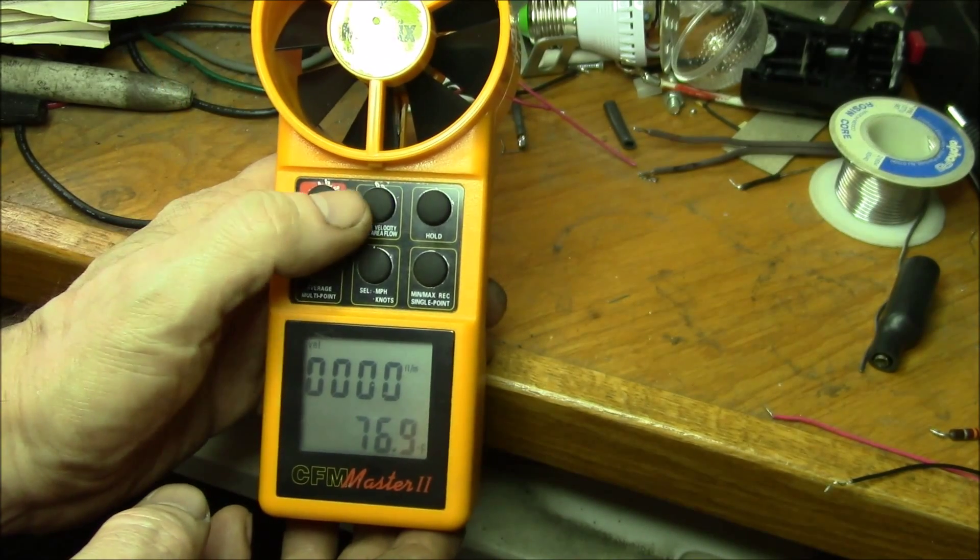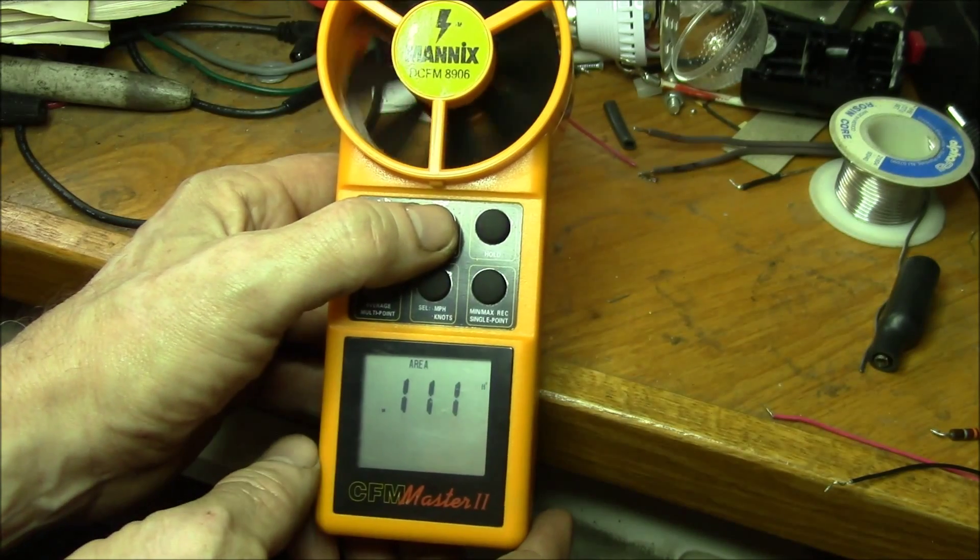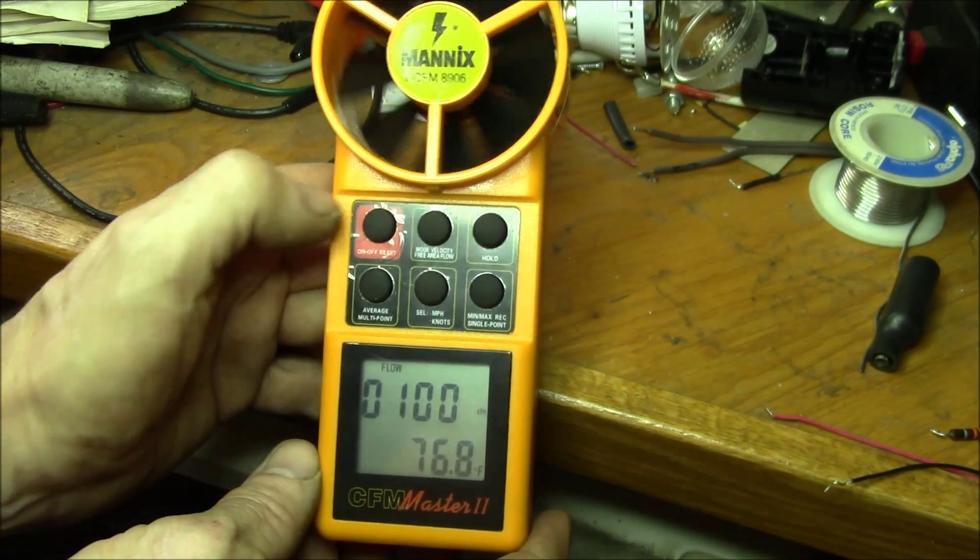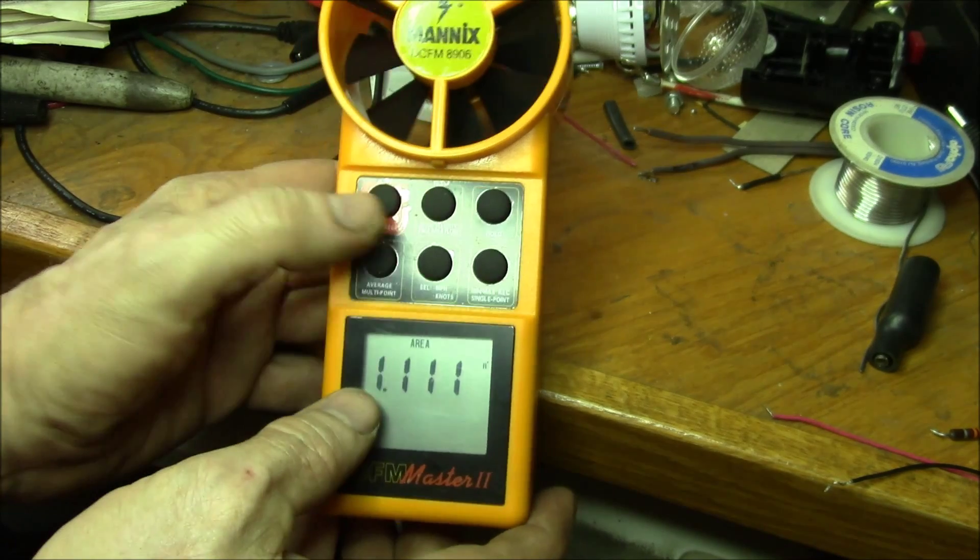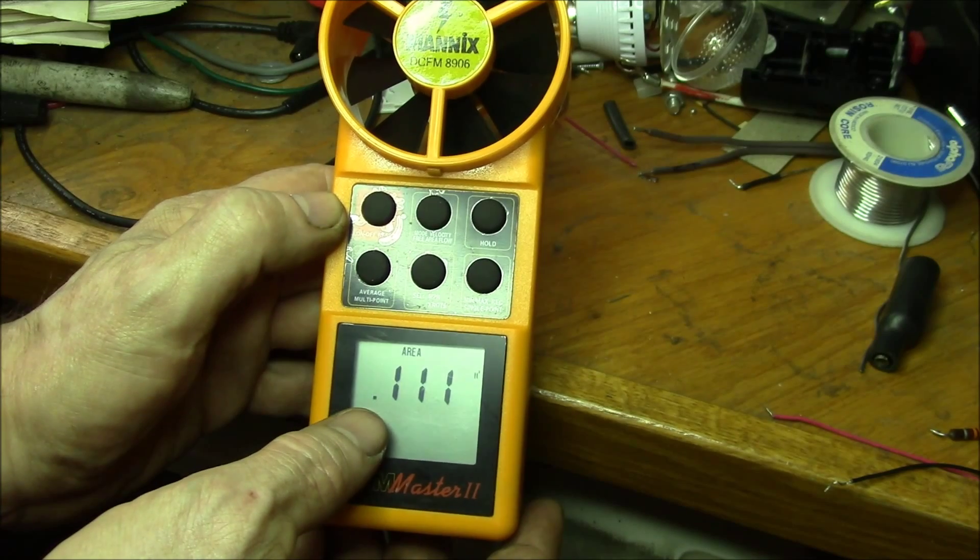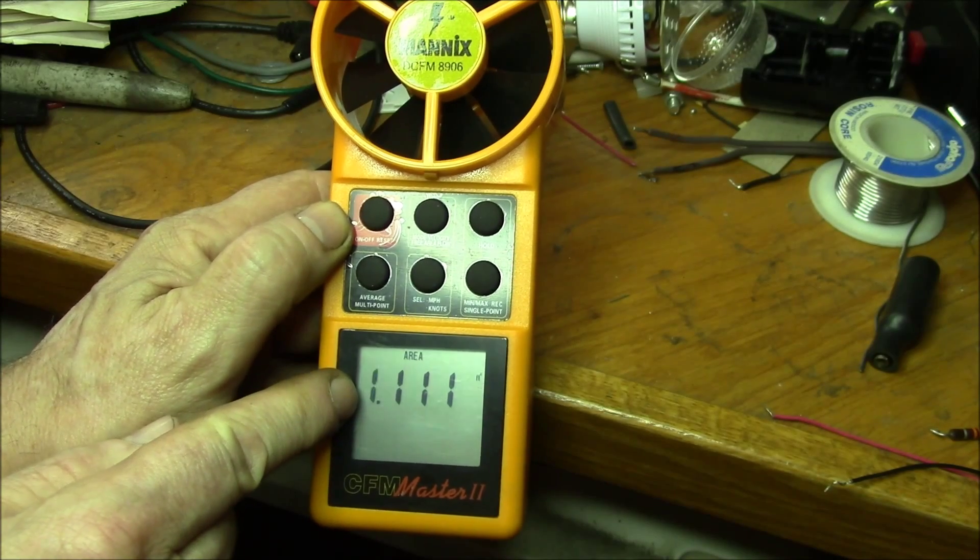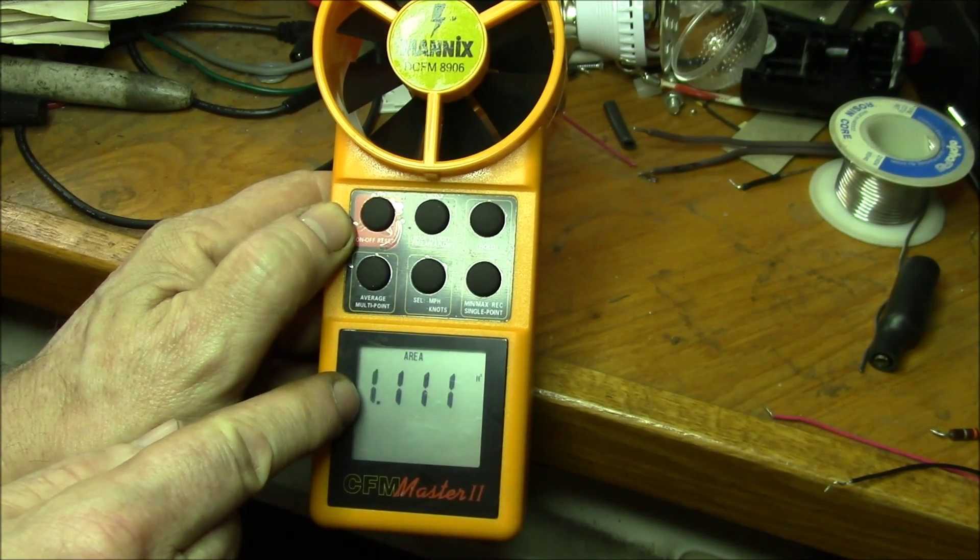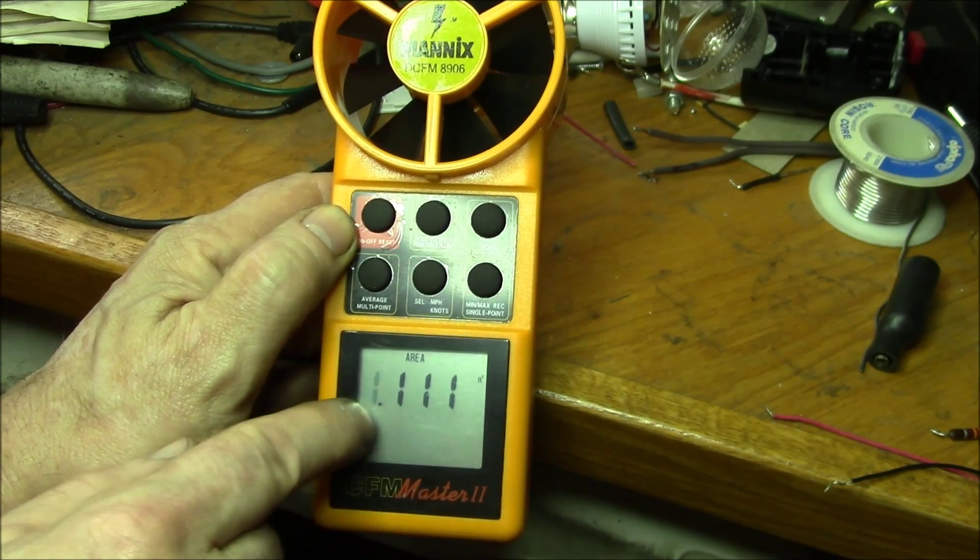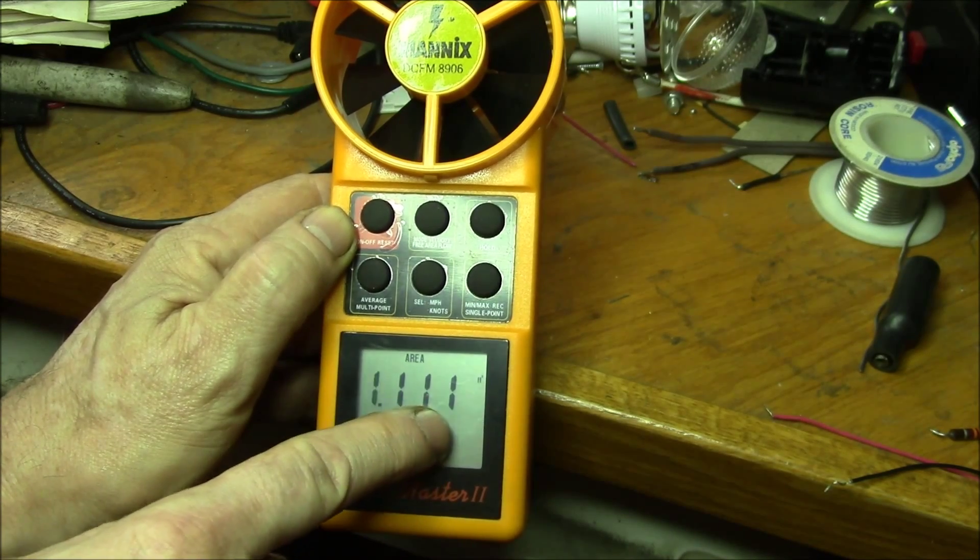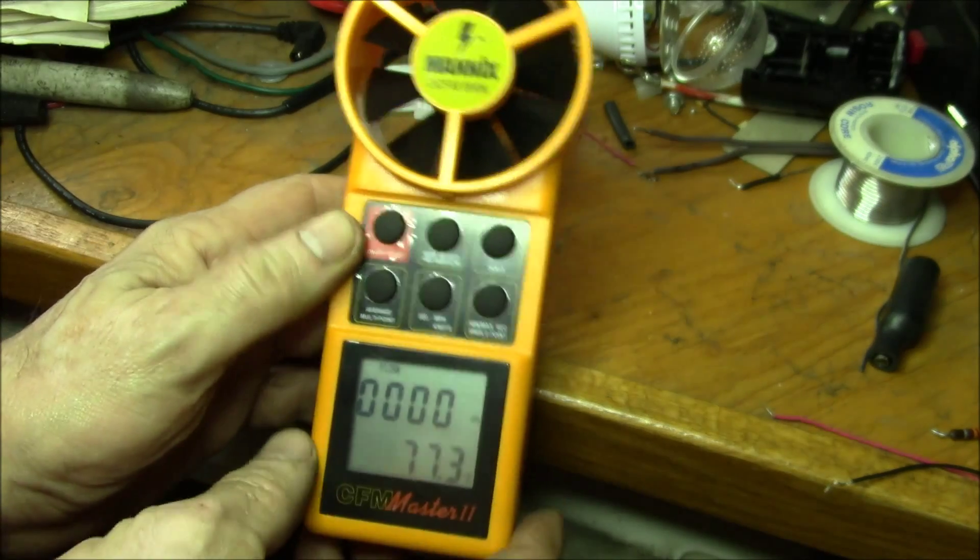This is what they use for balancing forced hot air heating systems. You can either work in cubic feet. The fancier meters will actually have this setting where you can select your duct size, like a four inch duct or six inch duct. With this meter you've got to look up in a table what the equivalent square feet of a given size duct is, and then you enter the square feet of the duct in here and then it computes the cubic feet per minute.